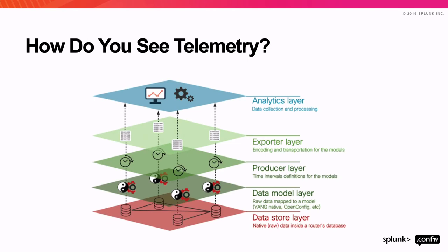One of my colleagues created an OSI model mapping with telemetry. At the very bottom you have the data storage layer — that's your database on the router where you store all the counter information. Moving up is the data model layer, where you define the YANG model, what data and counters it will look like. Above that is the produce layer, which defines how fast you're going to send the data. Then the export layer defines what method and how efficiently you want to send your data. At the top is visualization.